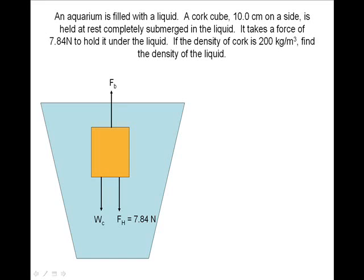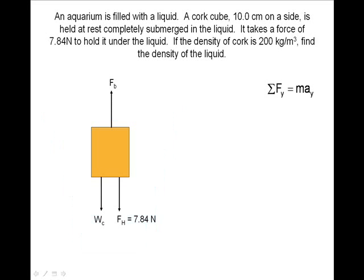Here is our force diagram for the cork. We will use Newton's second law to find the buoyant force acting on the cork. The acceleration is zero since the cork is being held down, so our equation can be rewritten.